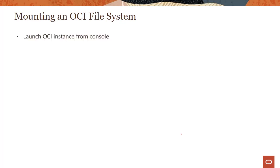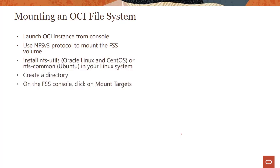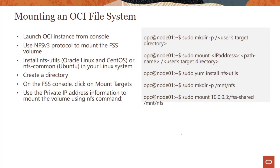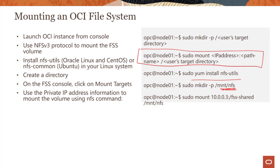To use the file storage service: launch an instance, install NFS utilities if not already present, create a mount point, and run the mount command specifying the mount target IP, the export path, and the local directory on your instance. The process is really straightforward. With that, let me jump over to the console and show you a quick demo of how the file storage service works in action. Thank you for joining this module.